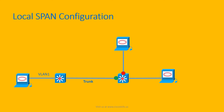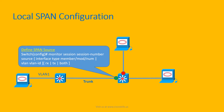To configure a local SPAN session, we first need to define the SPAN source. The command is entered at global configuration mode: monitor session [session-number] source [interface or VLAN]. You can also specify the direction as receive, transmit, or both.